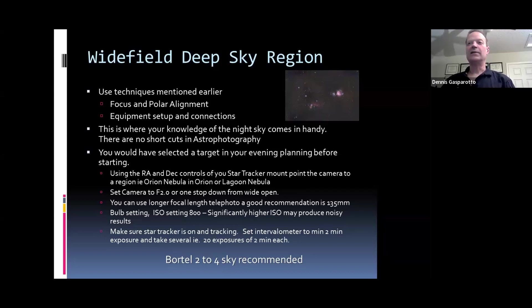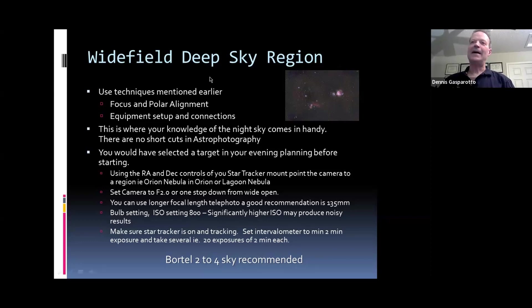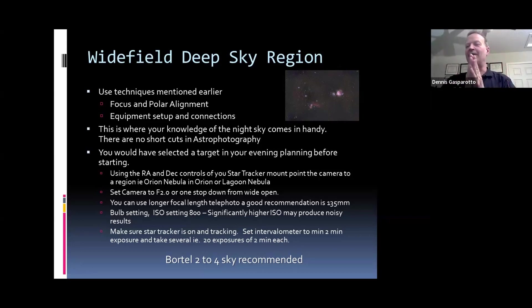For dust and outlying nebula like Barnard's Loop in this frame, you're going to have to take a minimum of two hours of exposures, more like four hours. So if you're taking two-minute subs, that's a lot of exposures. Either increase sub length a bit, but it's best to take shorter exposures — not too short — and lots of them. It depends what you want to bring out. For basic nebula a few minutes will do it, but to get the dust lanes and everything else, it's a lot more exposure time.